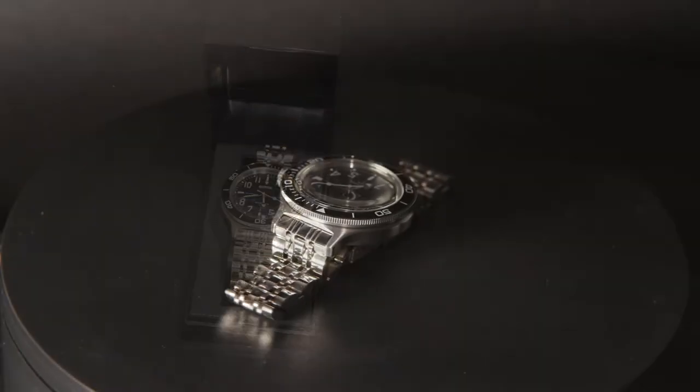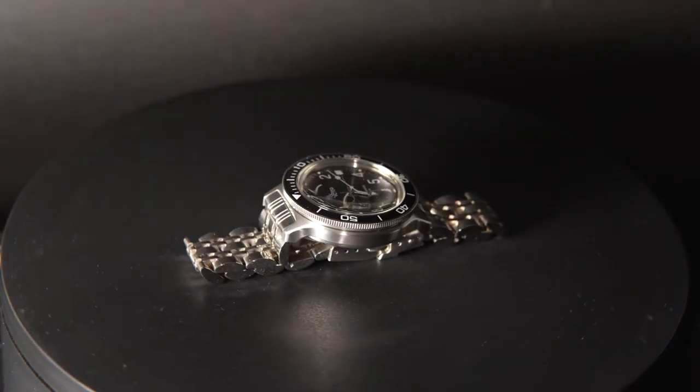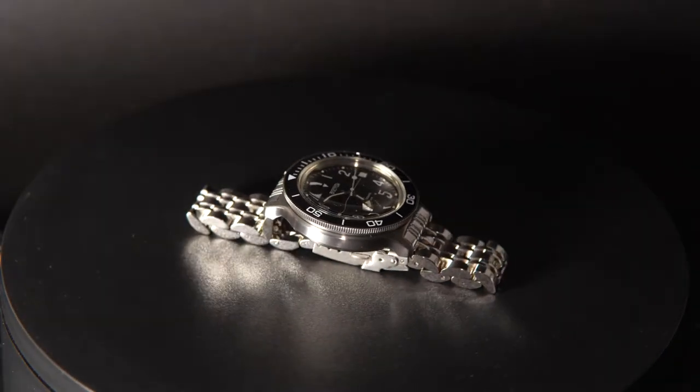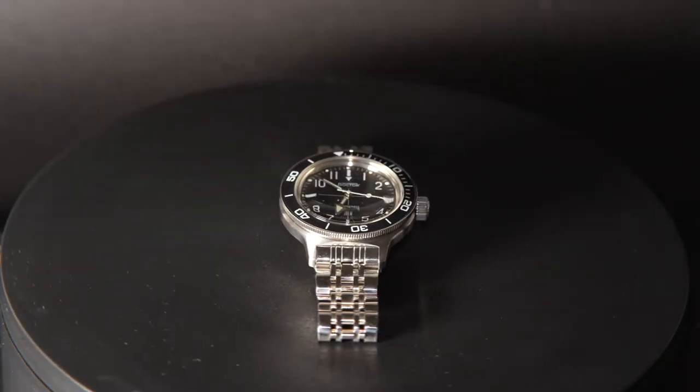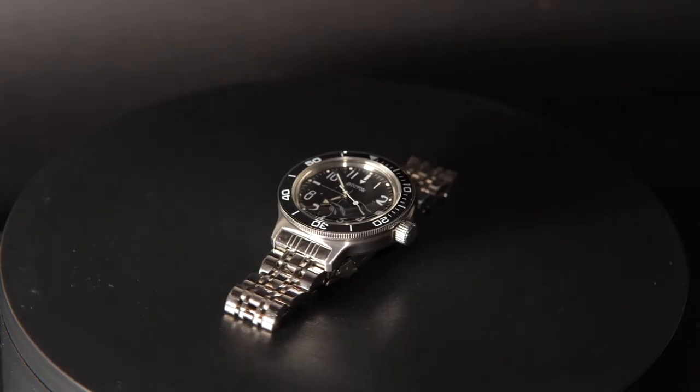Now, let's also talk about the elephant in the room. That bracelet. The metallic bracelets on Vostok watches don't exactly have a good reputation. And for good reason. People tend to say that they are uncomfortable and that they pull out hairs.